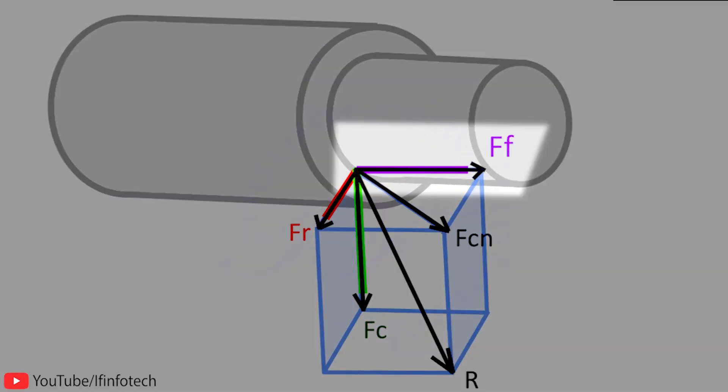Here FF is the feed force or axial force which acts in horizontal plane parallel to axis of workpiece but in opposite direction to feed.